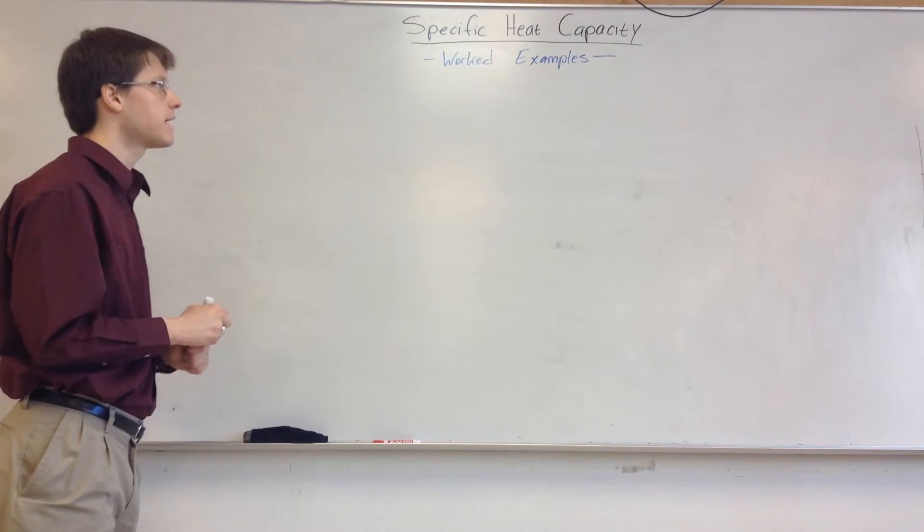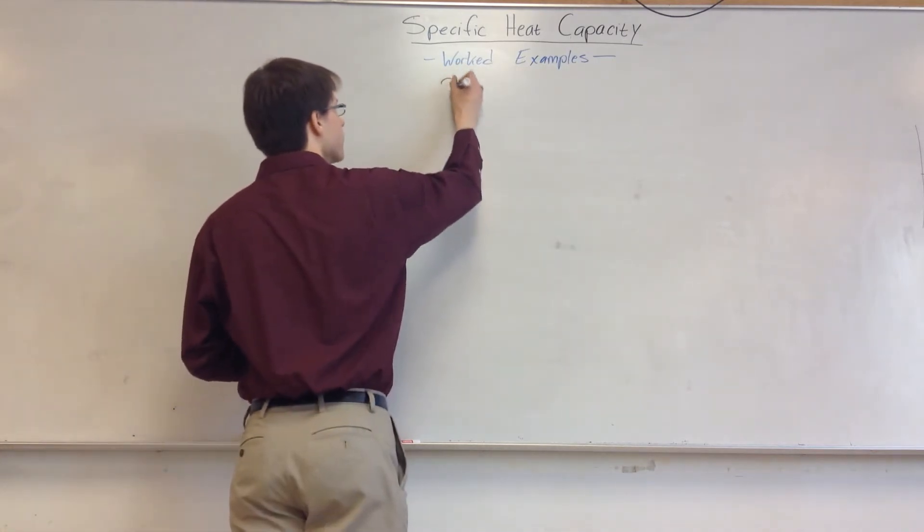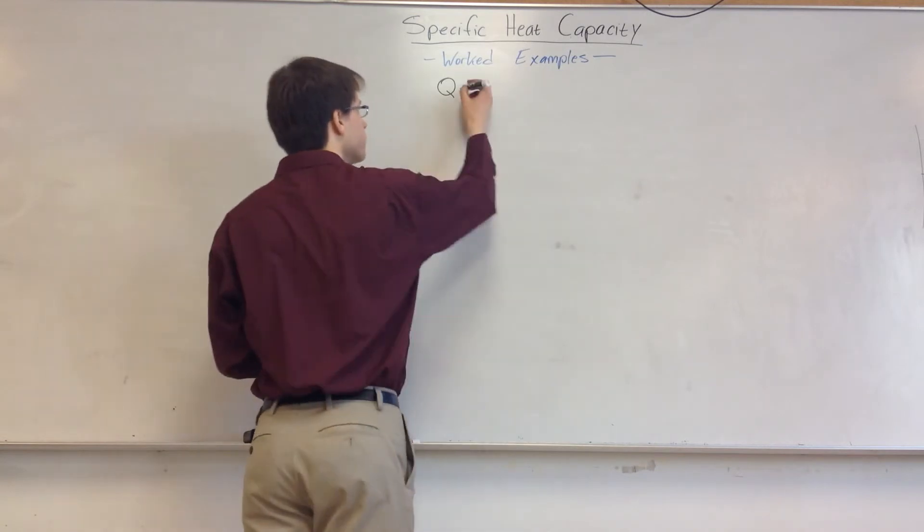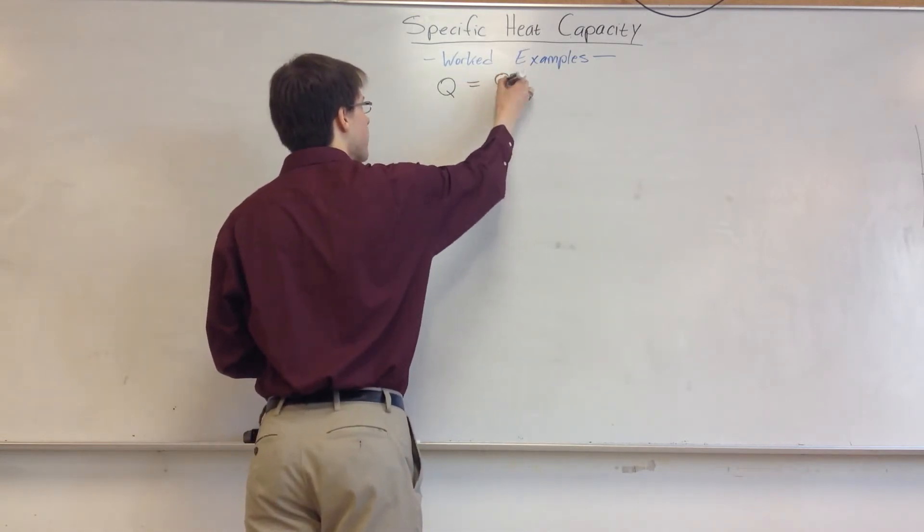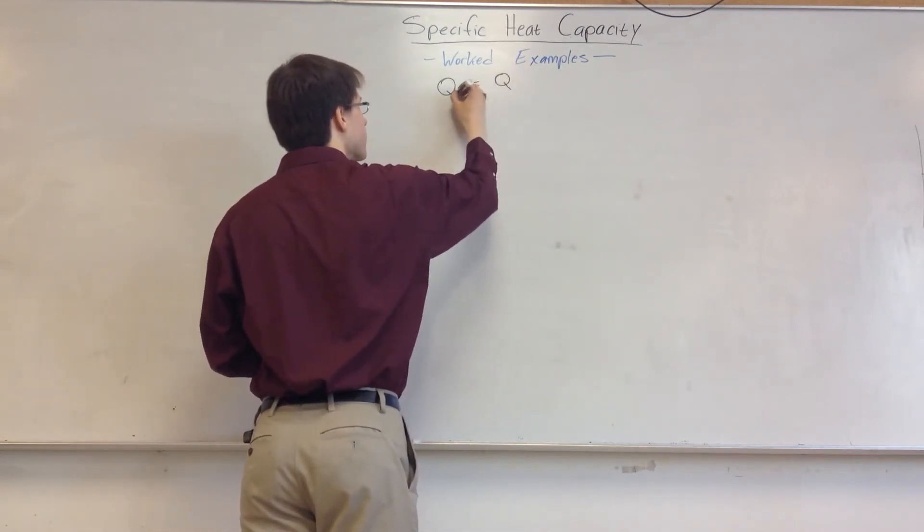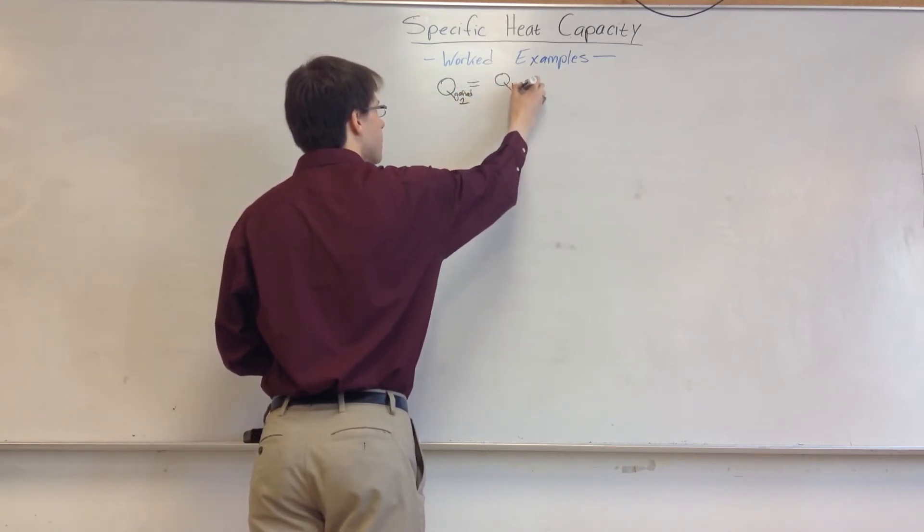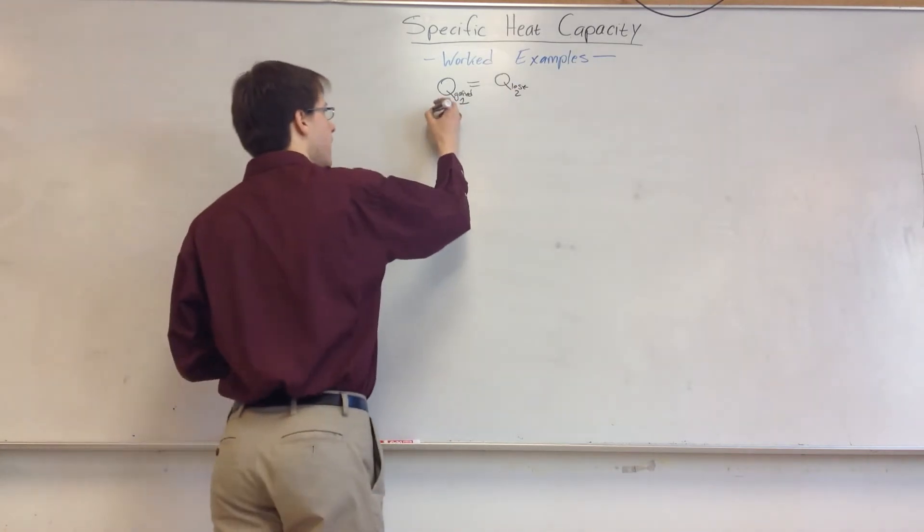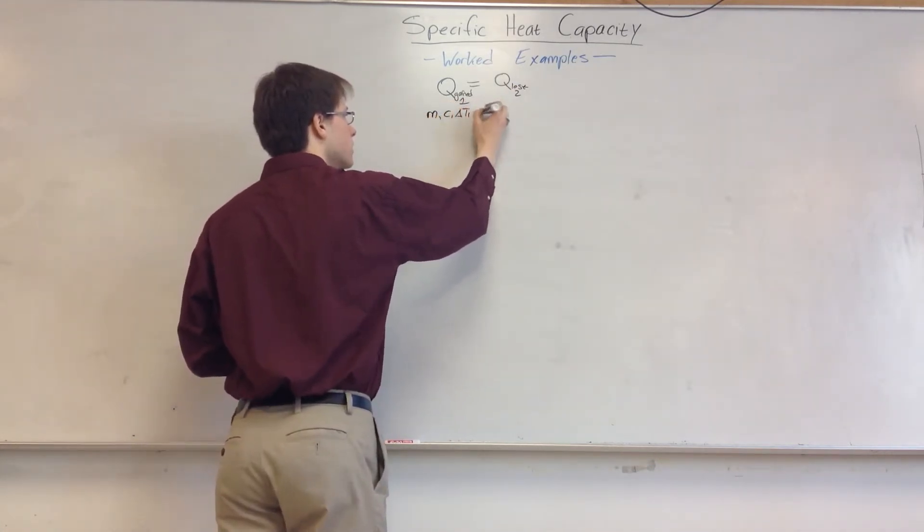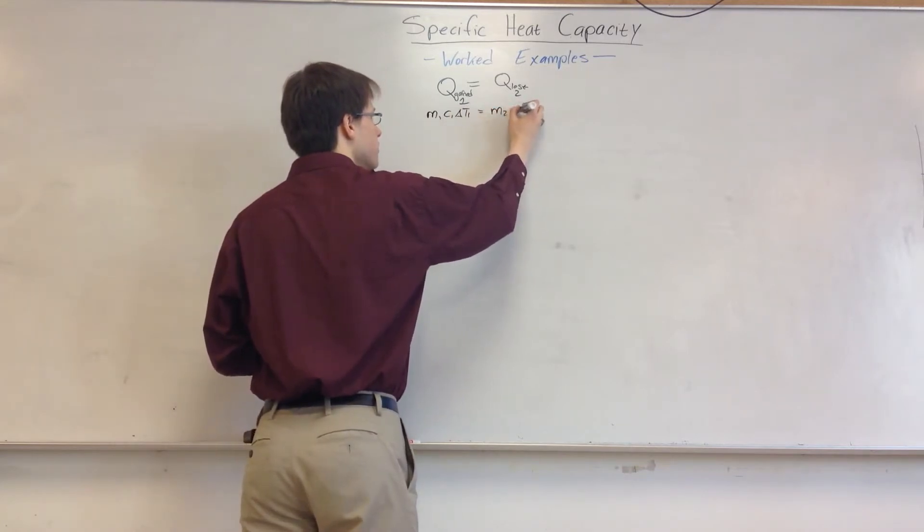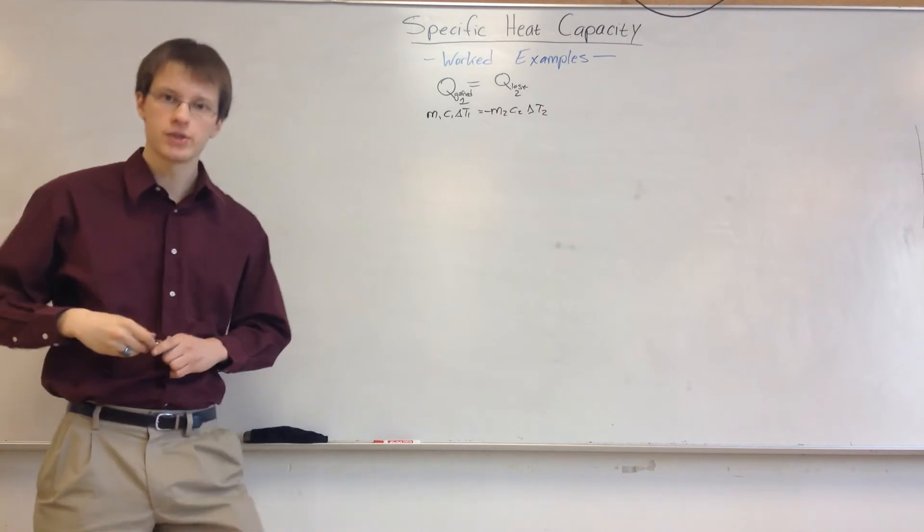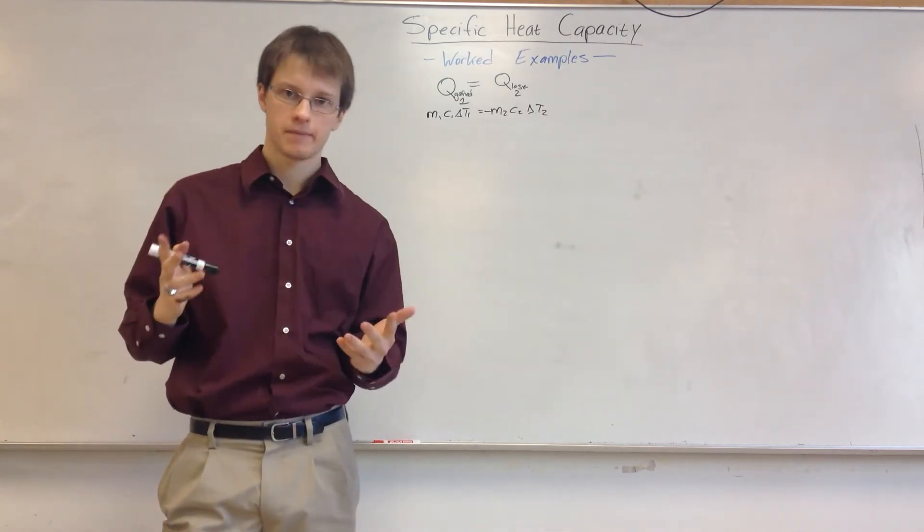So this allows us to say that the energy released or absorbed by one substance will be equal to the energy lost, so the energy gained by substance one is equal to the energy lost by substance two. So then we can say, okay, well then M1 C1 delta T1 is equal to M2 C2 delta T2 negative. Because if we're losing energy, then it's a negative note, okay?